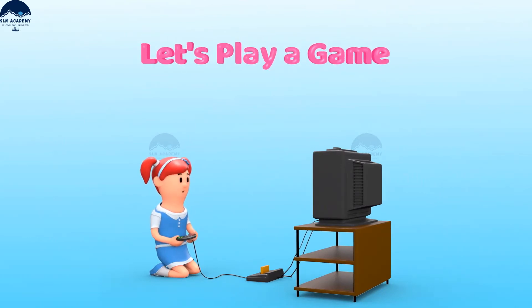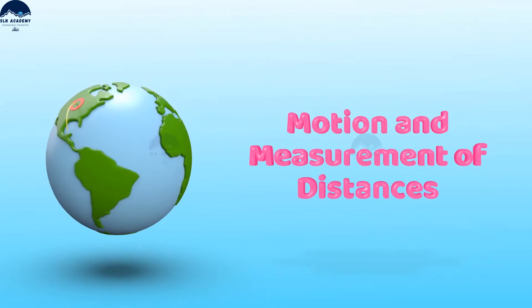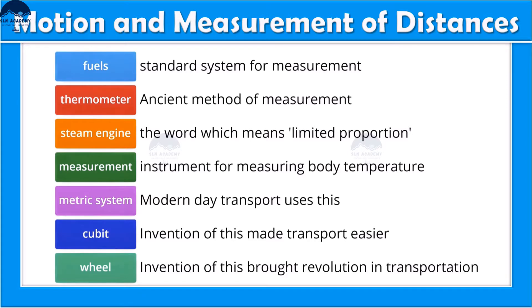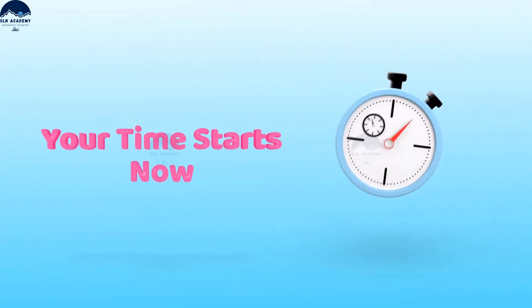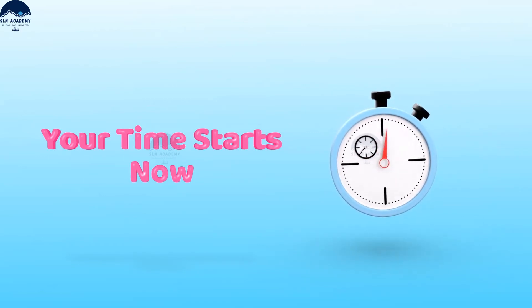Hi friends, in this video let us play a game which is related to motion and measurement. Shall we start? Here we have two lists. In list one we have seven words, and in list two there are some clues which are related to these words. We need to match these words with their corresponding clues. You have one minute exactly to find the clues. Your time starts now.